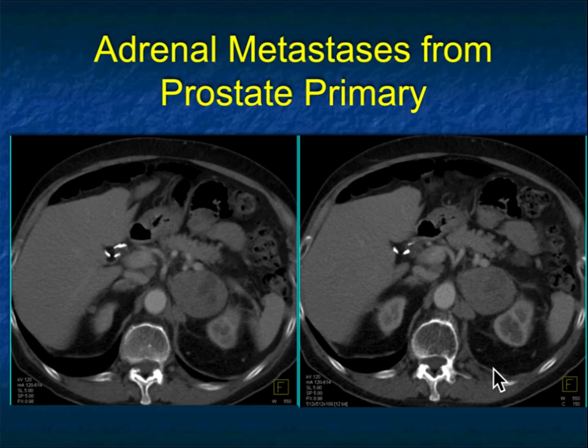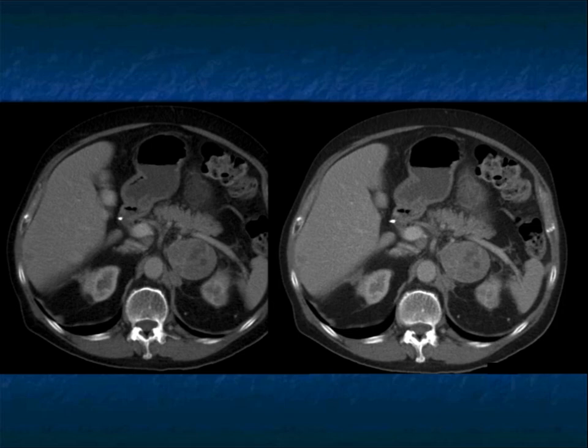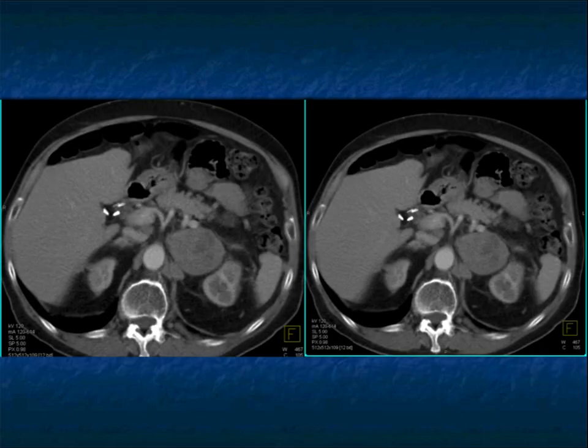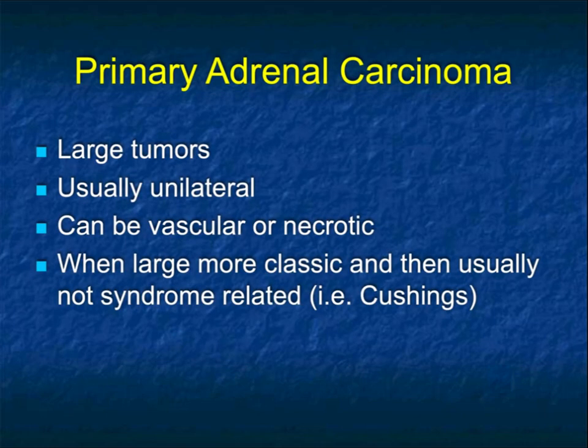Here's a patient with a large adrenal mass and some nearby nodes. Going through a differential — primary cancer, metastatic disease — it looks ominous because it's solid with adenopathy. This ended up being metastatic prostate cancer to the adrenal gland, which is somewhat unusual. The patient had some adenopathy but not bulky, so it is indeed a challenge.